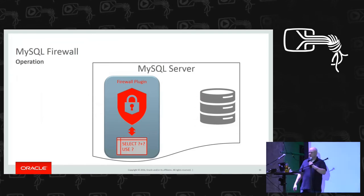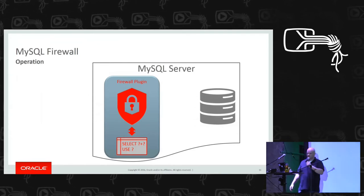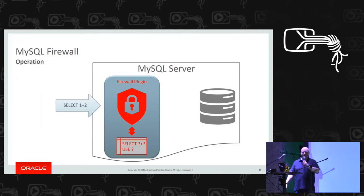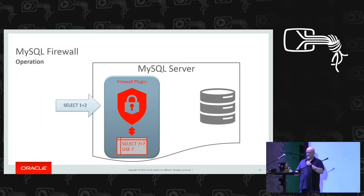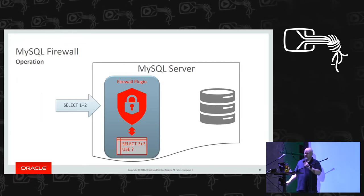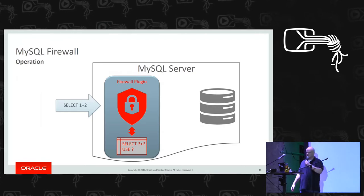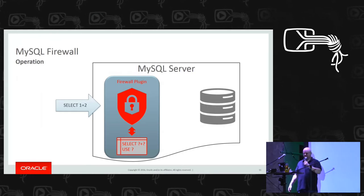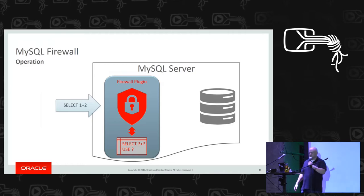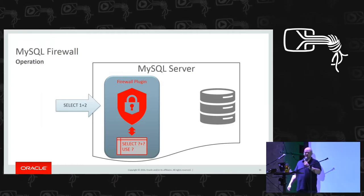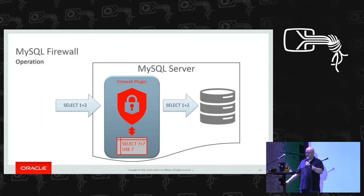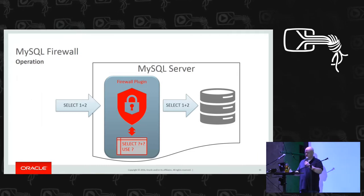Here is how it operates. You have the MySQL server and the firewall plugin sitting in front of the server proper. When a query comes in, it normalizes the query by removing constants, comments, whitespace, and all of that. Then it searches the statement cache and finds a matching normalized query — for example, 'SELECT ? + ?' — so that query can go in and be executed by the MySQL server.